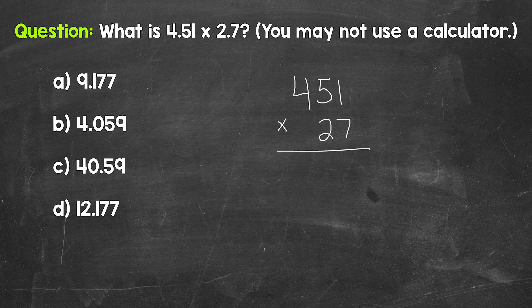So we start with seven times one, that's seven. Then we have seven times five, that's 35. And then seven times four is 28, plus that three is 31. We are done with this seven and this three.